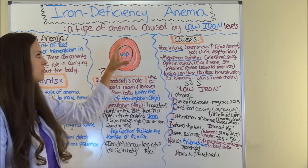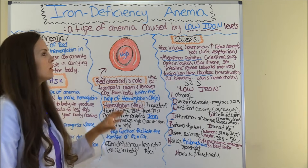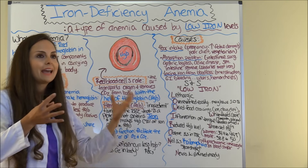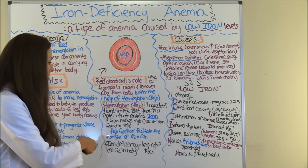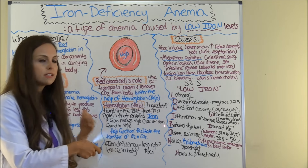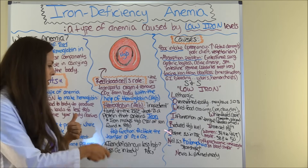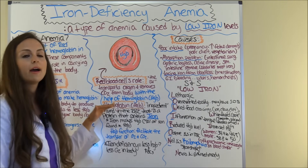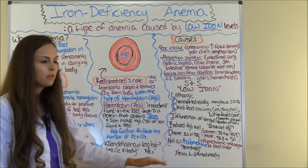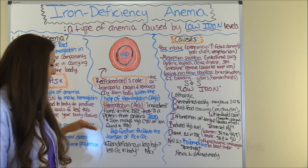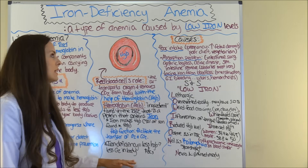Even though the red blood cell will be going around doing its job, if you don't have the hemoglobin on board, it can't carry and transport oxygen throughout the body — they go hand in hand. Hemoglobin's function, in a nutshell, is to facilitate the transfer of oxygen and carbon dioxide. So with iron deficiency anemia, when you have low iron, you will have less hemoglobin, less red blood cells, and in turn less oxygen in the body.